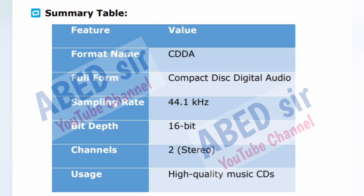Summary table — CDDA: Full form: Compact Disc Digital Audio; Sampling Rate: 44.1 kHz; Bit Depth: 16-bit; Channels: 2 stereo; Usage: high-quality music CDs.